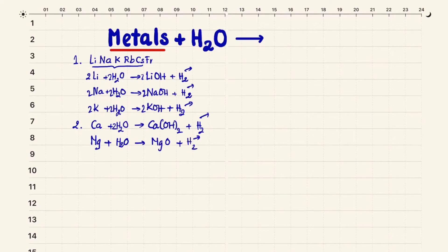Zinc also reacts with water, but the water here is hot water — steam or gas state. The reaction produces zinc oxide and hydrogen gas: Zn + H₂O(g) → ZnO + H₂.